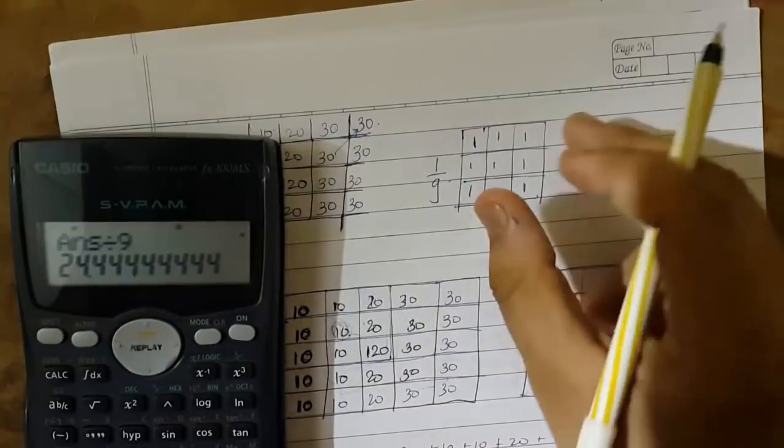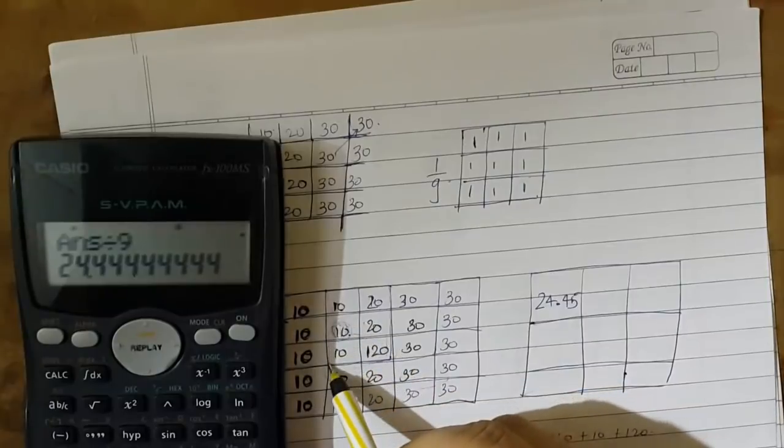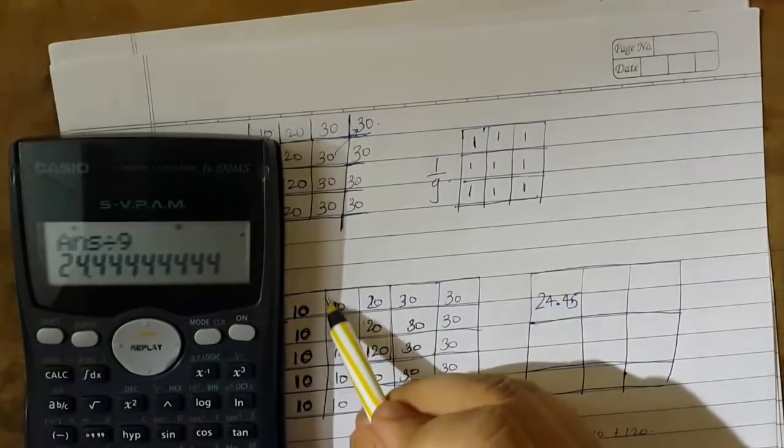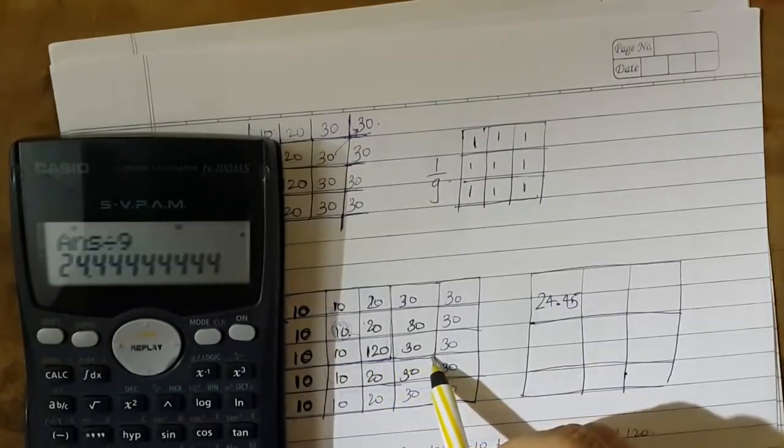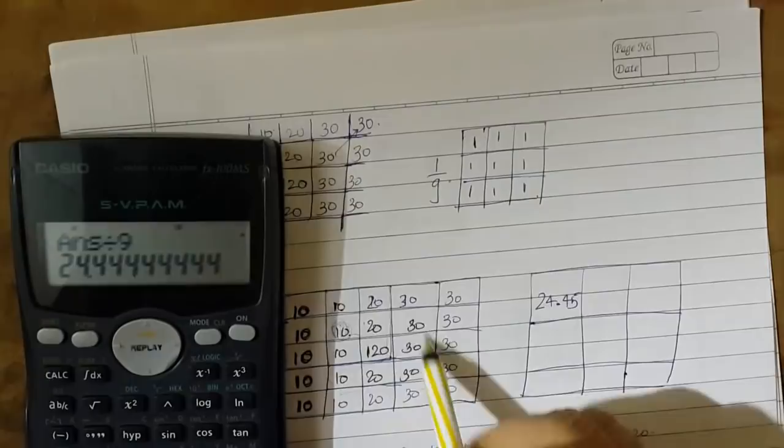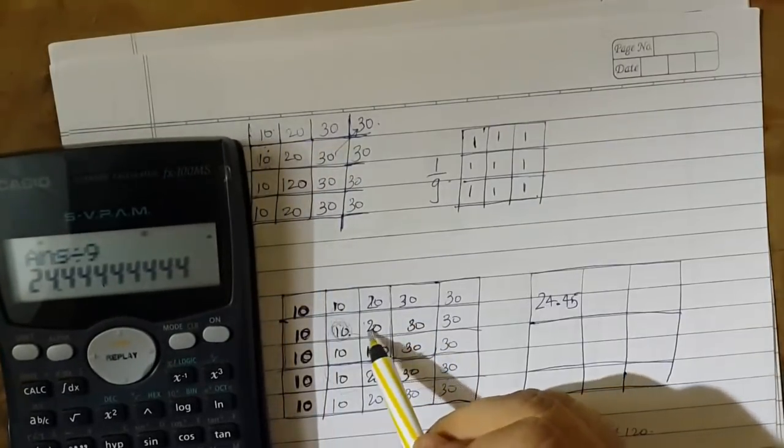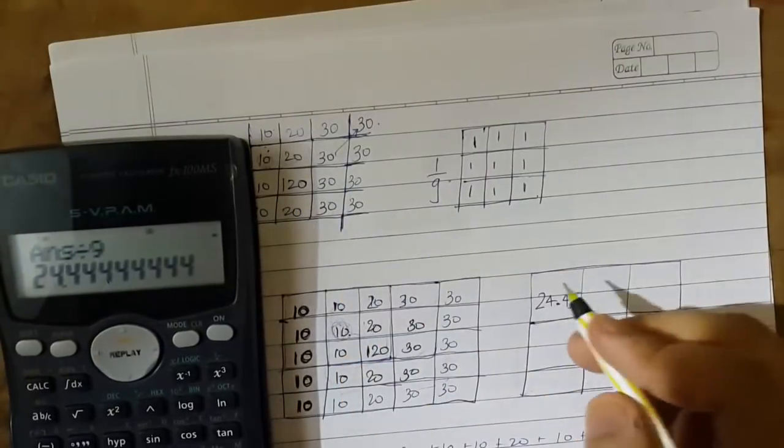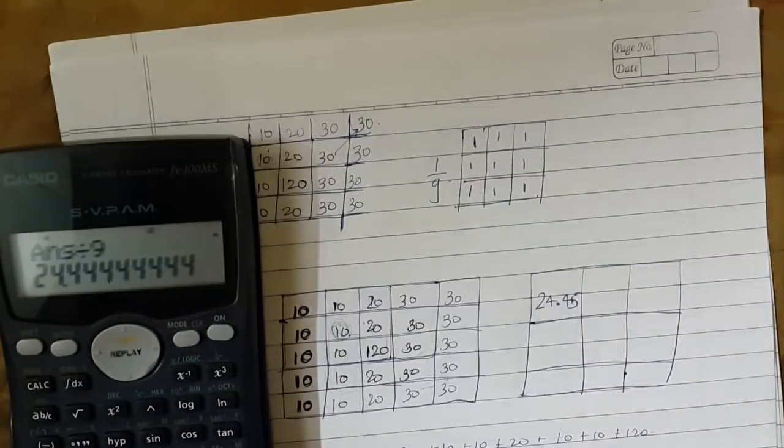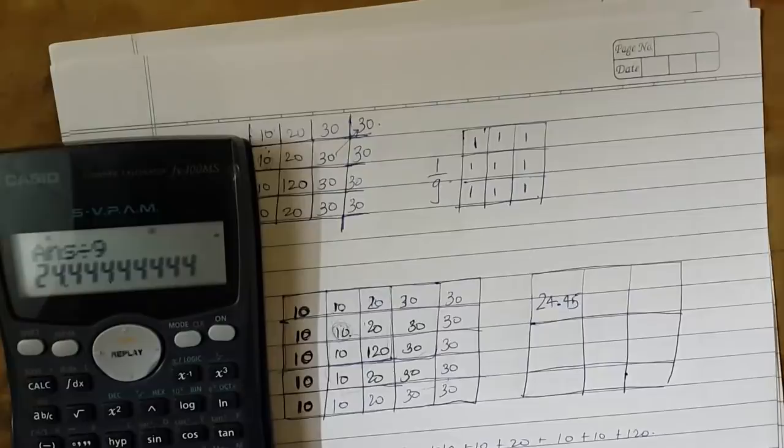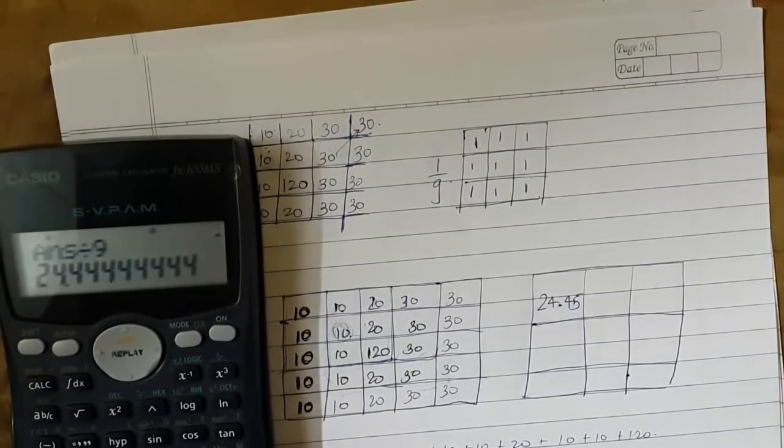Now I will approach similarly by imposing now this mask over this 3x3 area where 1 10, 3 10s, 2 20s, 1 20, and 3 30s. The center most element will be now the 20 which is the second element in my original image. I will calculate the average.